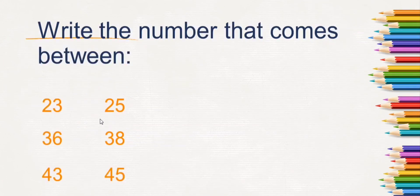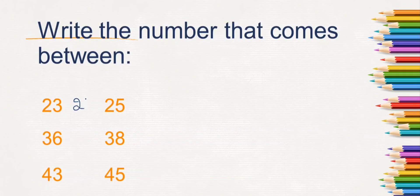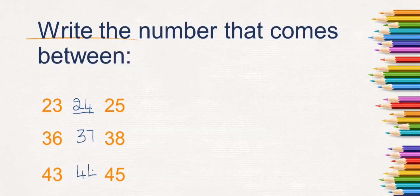Next, write the number that comes between. Which number comes in between 23 and 25? 24. Which number comes in between 36 and 38? 37. Which number comes in between 43 and 45? 44.